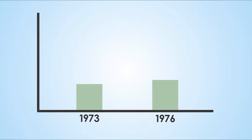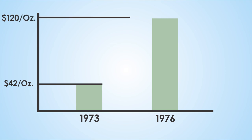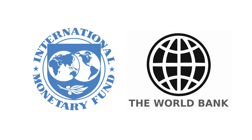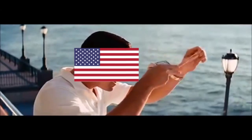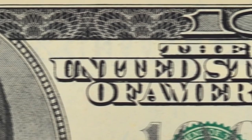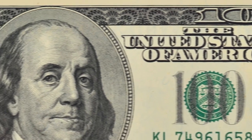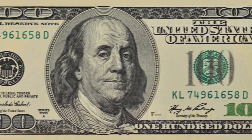Gold quickly shot up to well over $100 an ounce, more than twice as much as it was valued in the Bretton Woods system. However, the Bretton Woods system has not been totally forgotten. The IMF and World Bank still exist today, and the United States is still the reigning champ as far as economic excellence is concerned. The only thing that has changed is that the US dollar is backed by nothing but a promise and a smile from the US federal government.